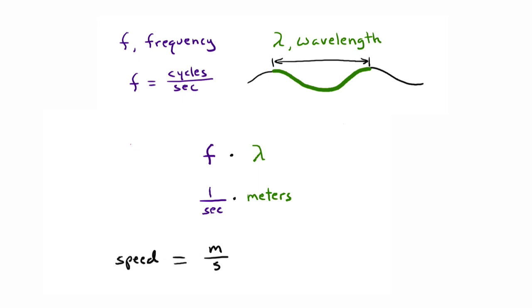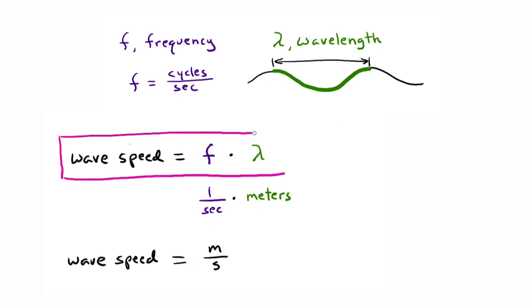What you're getting here is the speed of the wave, which is how fast it moves. So we find the speed of a wave equals its frequency times its wavelength.